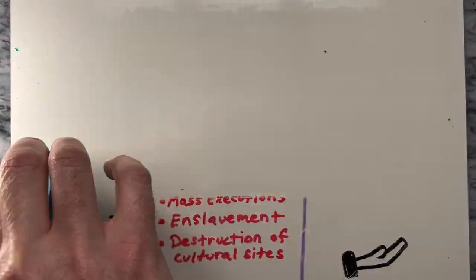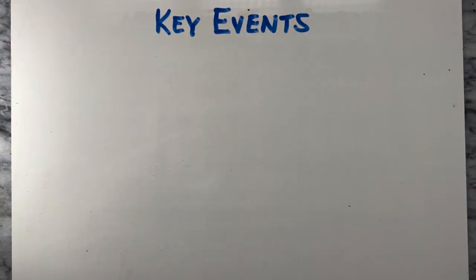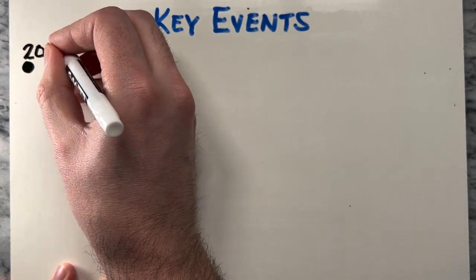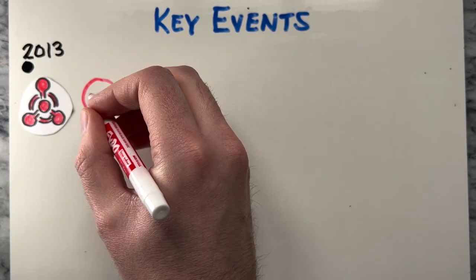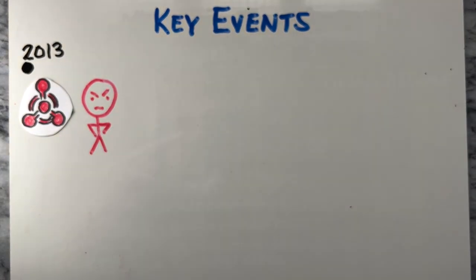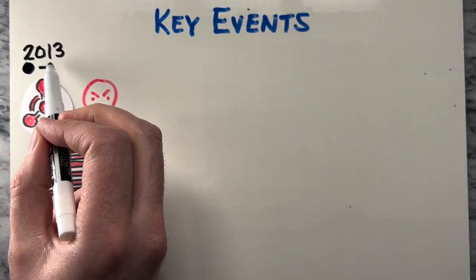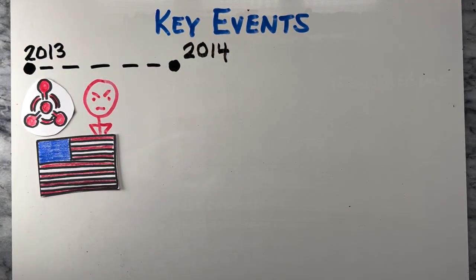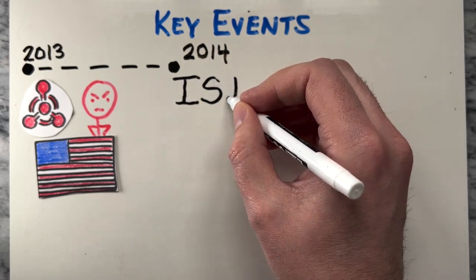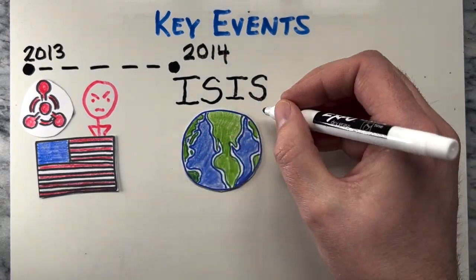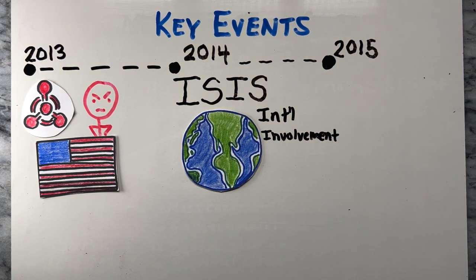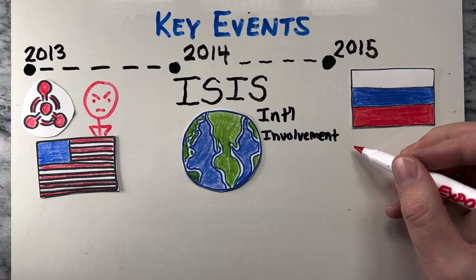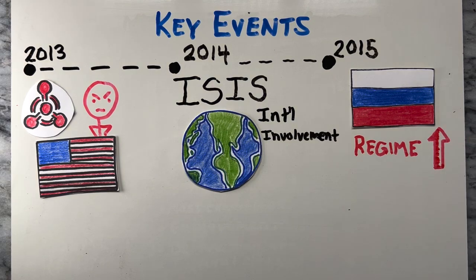The Syrian Civil War has been marked by several key events and turning points, including the Assad regime's use of chemical weapons against civilians in 2013, which drew international condemnation and threats of military intervention from the United States and other countries. The rise of ISIS and its declaration of a caliphate in 2014 further complicated the conflict and led to increased international involvement. The Russian intervention in support of the Assad regime in 2015 helped turn the tide of the war in the regime's favor.